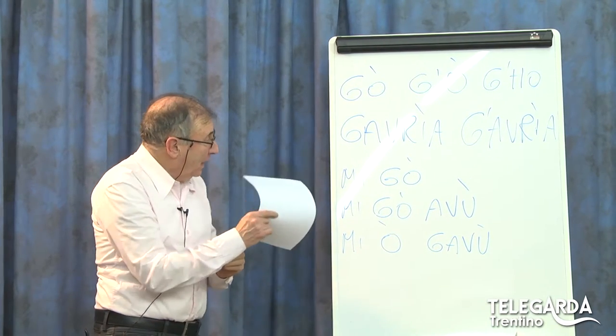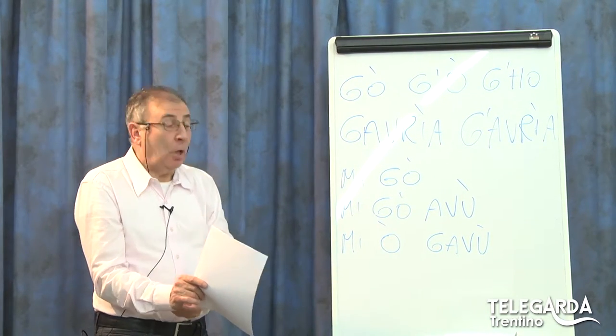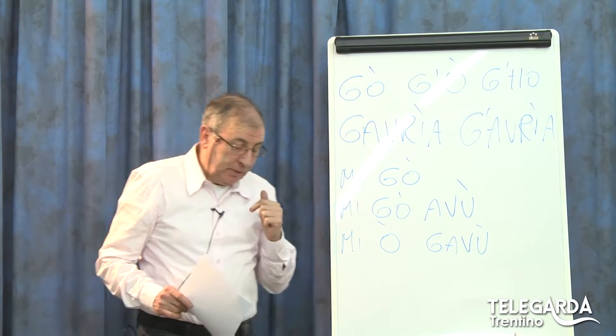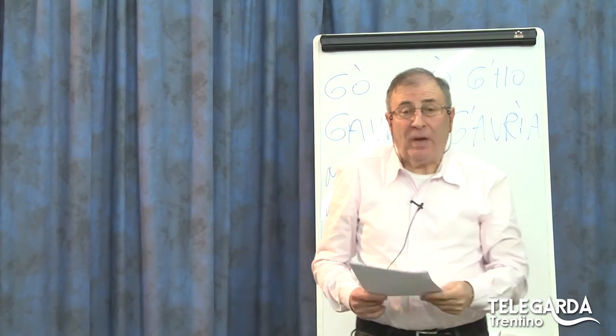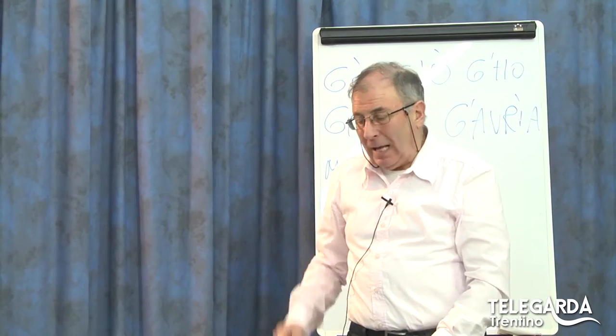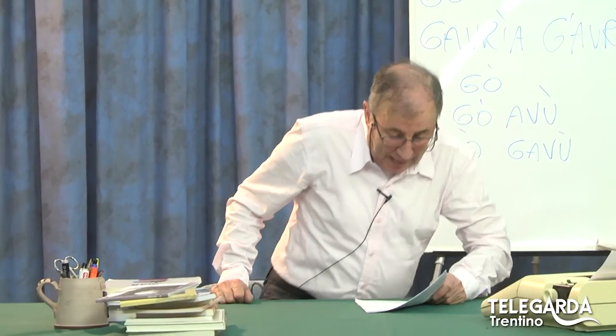Perché oggi sono partito dal verbo avere? Perché appunto oggi ho intenzione di continuare con i verbi, con la coniugazione del verbo. E questa volta andiamo su un verbo qualsiasi, anche se è un verbo irregolare, perché è il verbo andare, ma mi si presta molto bene a questa lezione. Oggi parliamo del verbo andare, cioè il verbo 'nar'.